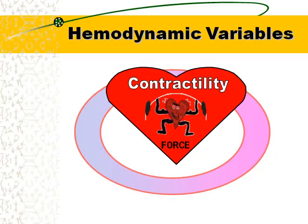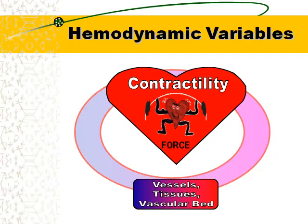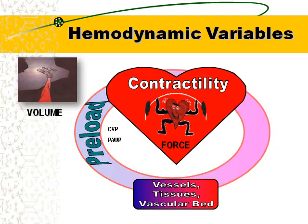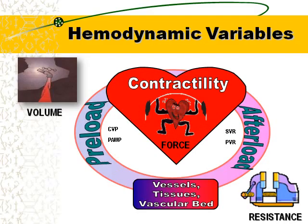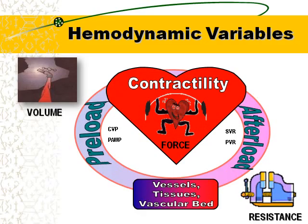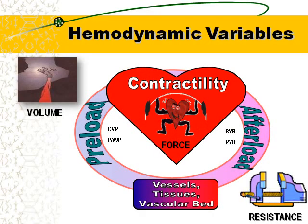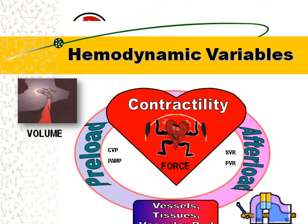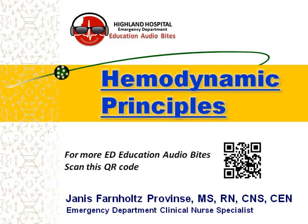Back to our drawing to sum it all up: the heart is in the middle. Preload comes from the venous side and is measured with CVP. The heart uses force and contractility to pump blood out against afterload on the arterial side. With a Swan, we would use SVR to measure afterload — the resistance and tone of the vessels. Thanks for listening.